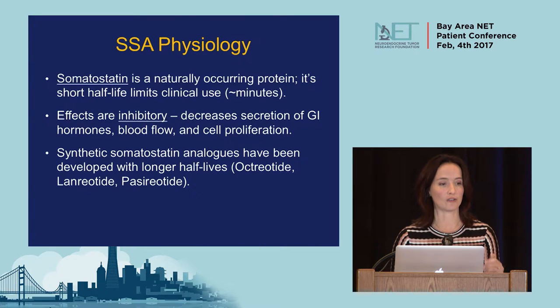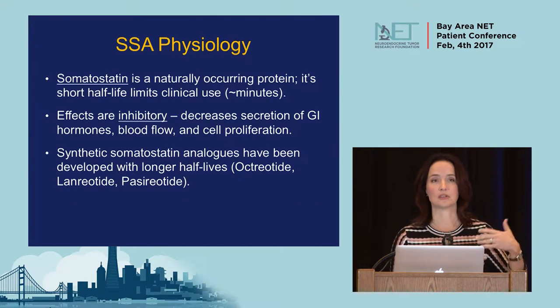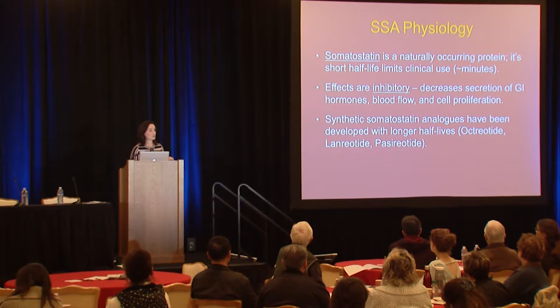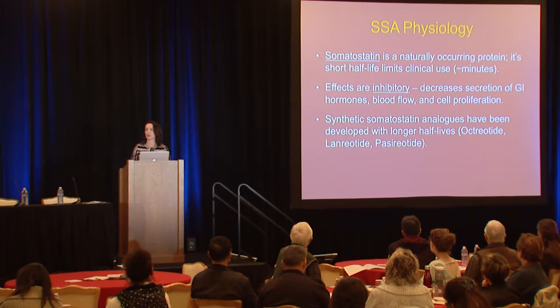Somatostatin analogs derive from a naturally occurring protein called somatostatin, studied in the mid-1900s. Its half-life is only minutes, making it impractical for clinical use. Its effects are inhibitory — decreasing hormone secretion, blood flow, and cell proliferation. We know somatostatin analogs were originally approved for carcinoid syndrome, but they also slow down the growth of neuroendocrine tumors. Synthetic analogs — octreotide, lanreotide, and pasreotide — have been developed with longer half-lives for clinical use.